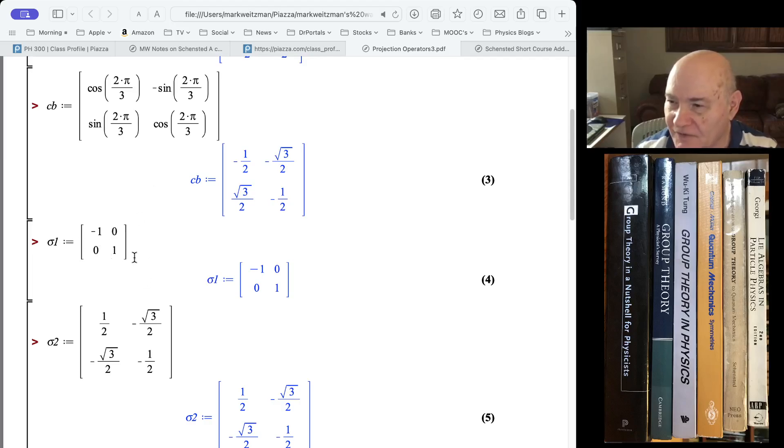I just wrote CB for C bar. This is a counterclockwise rotation of 120 degrees. It just has the angles negative of those. This is the matrix for a counterclockwise rotation.